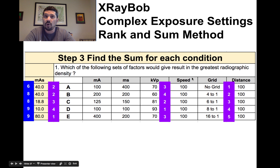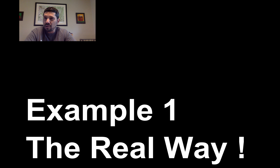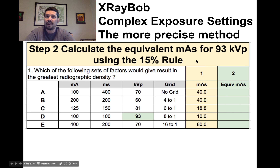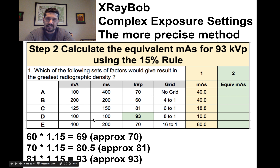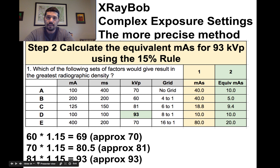First we rank the mAs values: 80 is the highest so it's ranked 1 for greatest density, 40 is second, 18.8 is third, and 10 is fourth. Then we rank the kVp values: 93 is highest (rank 1), then 81, then the two 70s. Finally we rank the grids: no grid gives the greatest density (rank 1), then 4:1, then 6:1, then 8:1, then 16:1.